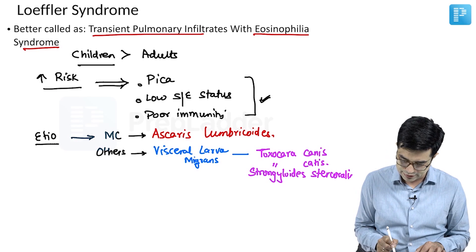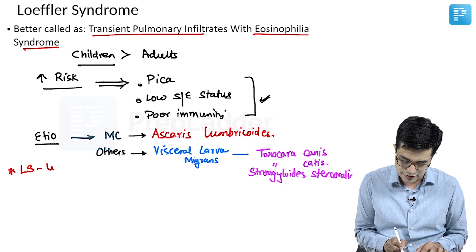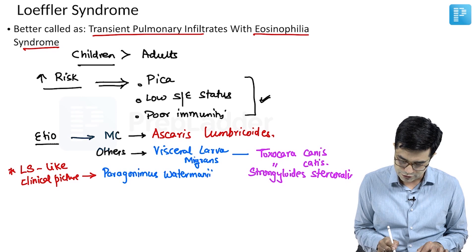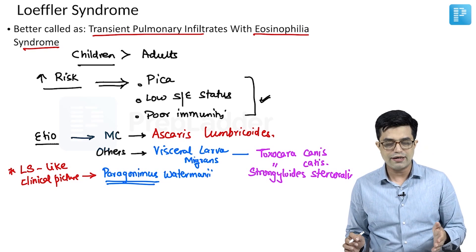A Loeffler syndrome-like clinical picture can also be produced by Paragonimus westermani. So Paragonimus species can also cause a Loeffler syndrome-like picture.